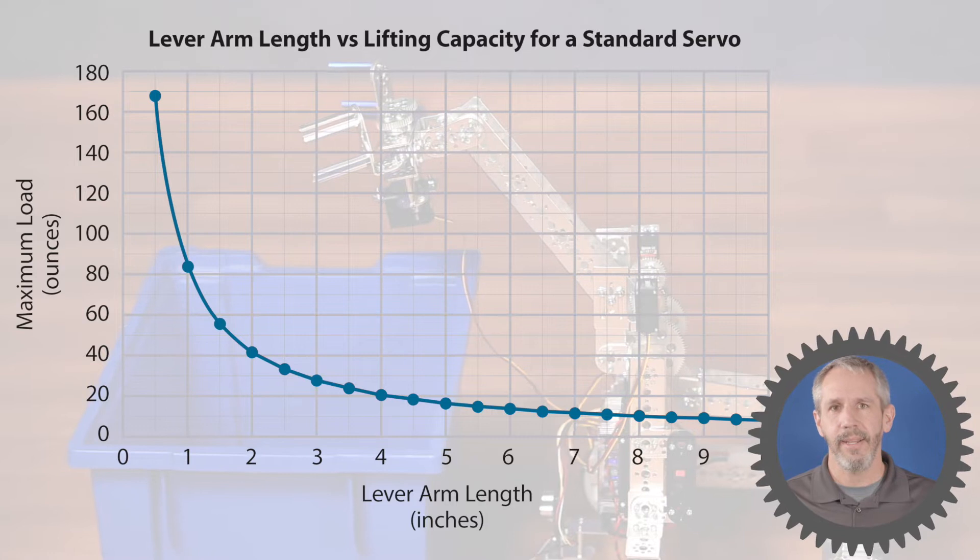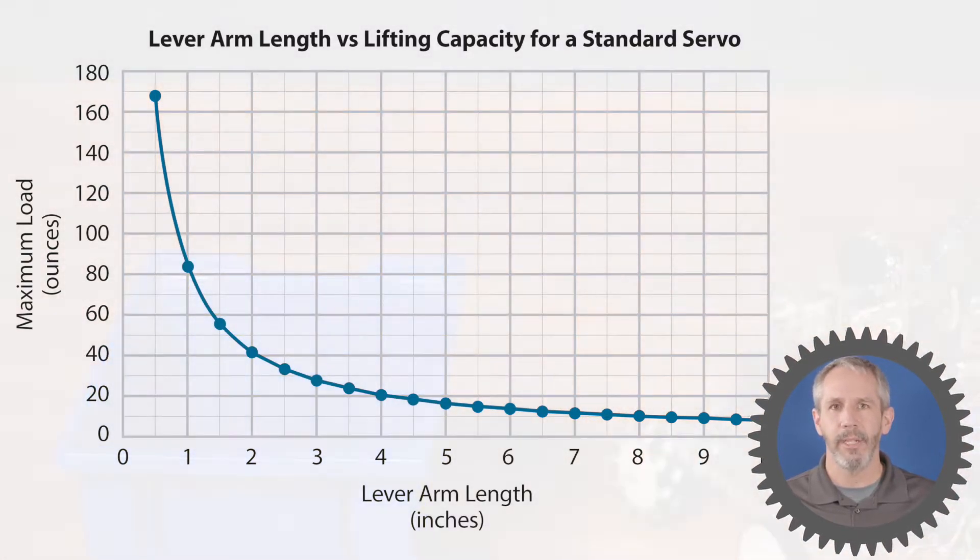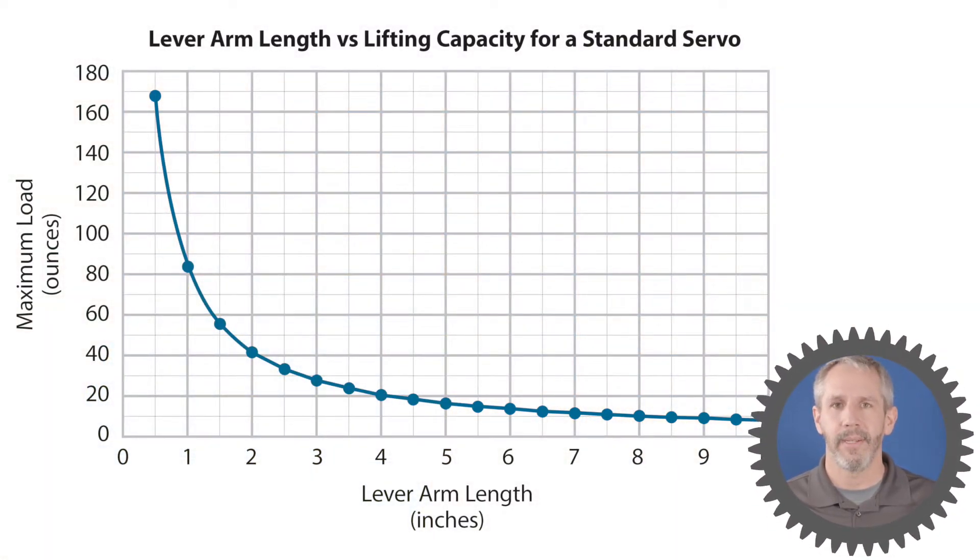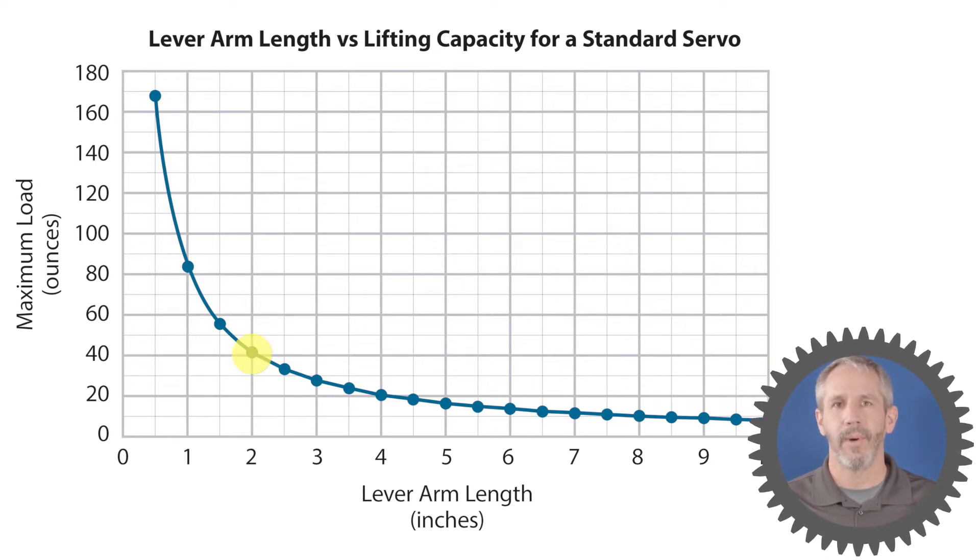However, as that distance increases away from the center of rotation, the amount of weight the servo can lift decreases. So at two inches, for example, it can only lift 42 ounces of weight. Here's a graph that shows you the relationship between the length of the lever arm and the amount of weight the servo can lift.